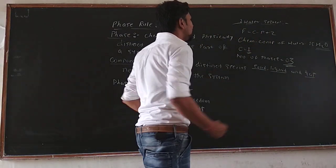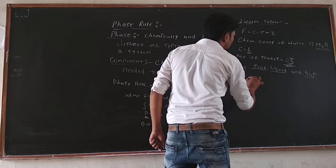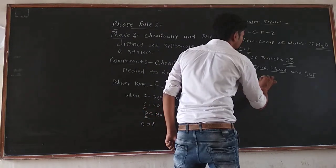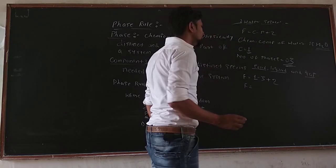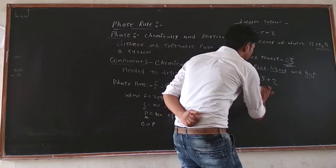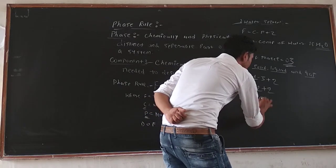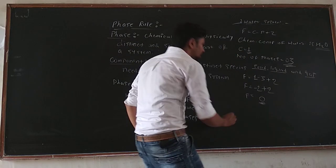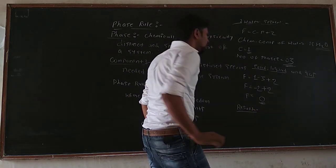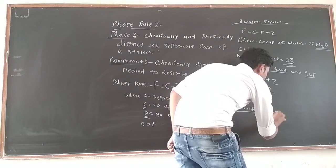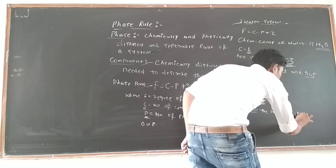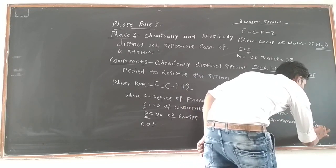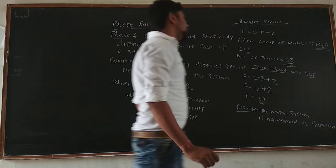We put the values into the formula: F = C - P + 2, which gives F = 1 - 3 + 2 = 0. The degree of freedom of the water system is 0, which means the water system is non-variate or invariant.